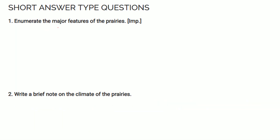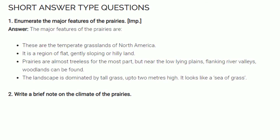Enumerate the major features of the prairies. These are the temperate grasslands of North America. It is a region of flat, gently sloping or hilly land. Prairies are almost treeless for the most part, but near the low-lying plains flanking river valleys, woodlands can be found. The landscape is dominated by tall grass up to 2 meters high — it looks like a sea of grass.